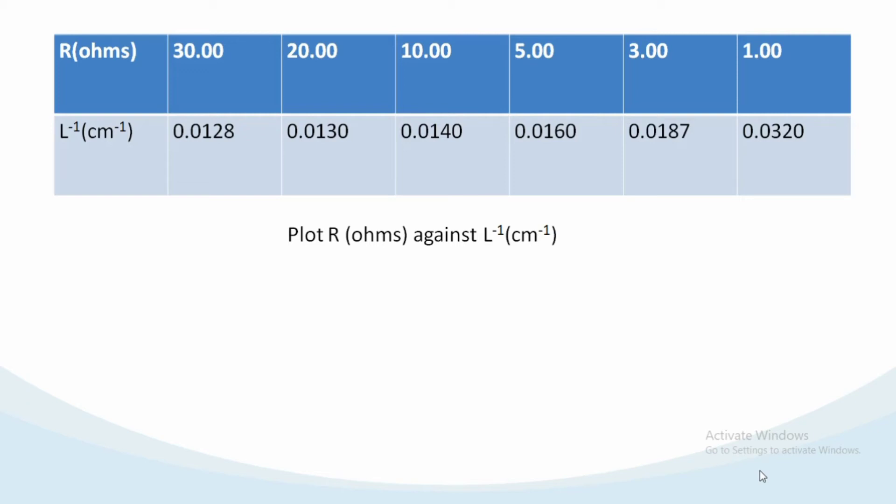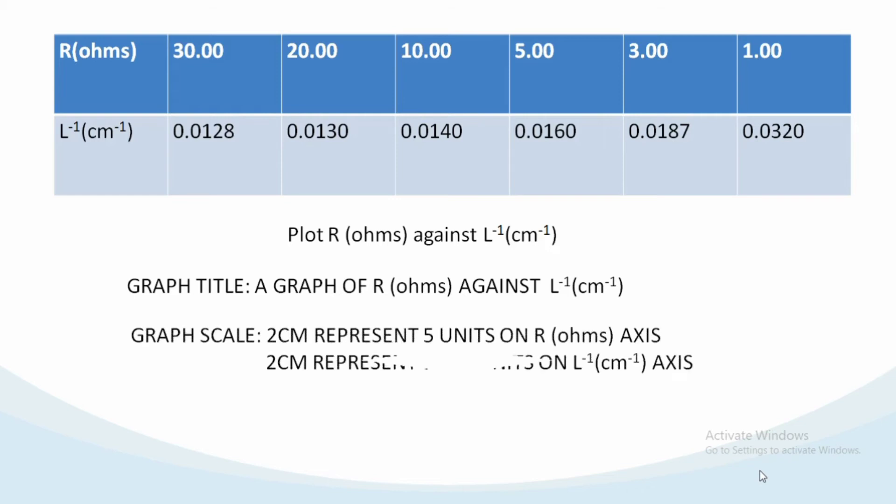The next table, I'm having resistance in ohms against length inverse. The values are 30, 20, 10, 5, 3, 1. The graph title is a graph of R in ohms against length inverse in centimeters to the minus one. You must put the units. Units are very paramount, very important. The scale will be 2cm represent 5 units on R(Ω) axis.